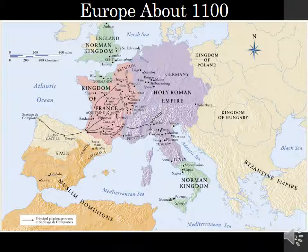Some important historical events to keep in mind: in 1054 the East-West schism split Christianity into Western Catholicism and Eastern Orthodoxy. In 1066 William the Conqueror won at the Battle of Hastings, overthrew the Anglo-Saxons in Britain, and began a period of Norman rule. We'll also take a look at the life of Hildegard of Bingen and her contributions to medieval society.